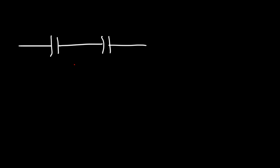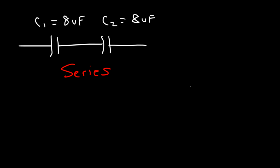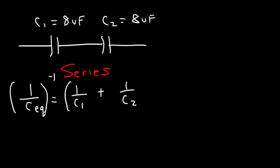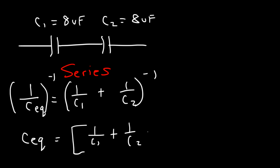What about this circuit? Let's say we have two capacitors in series. What is the equivalent capacitance? Let's say the first one has a value of 8 microfarads and the second one also has a value of 8 microfarads. Well, here's the formula you need. In series, 1 over C_EQ equals 1 over C1 plus 1 over C2. Solving for C_EQ, just raise both sides to the minus 1 power. So the equivalent capacitance is (1/C1 + 1/C2)^(−1).